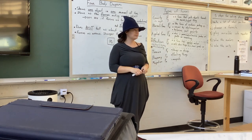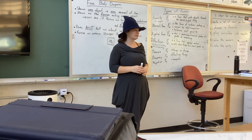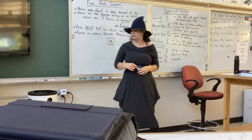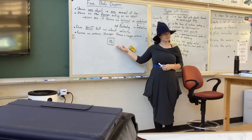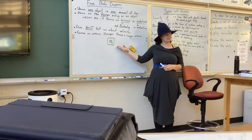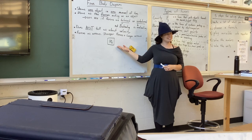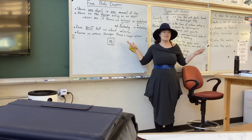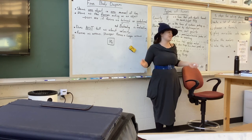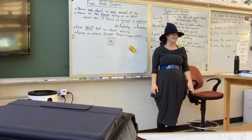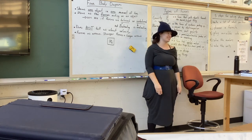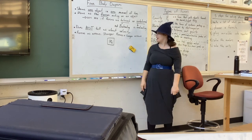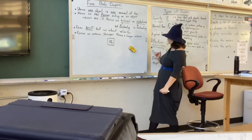So you have this list of forces. For the box — the box literally represents any object, any object we represent is drawn as a square. It doesn't matter what the object is, we draw it as a square.